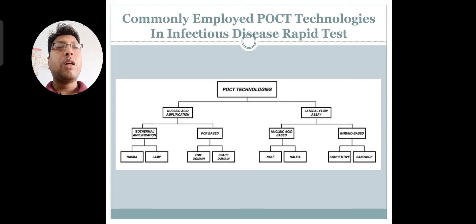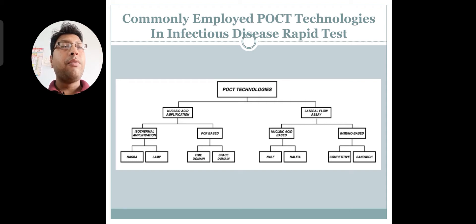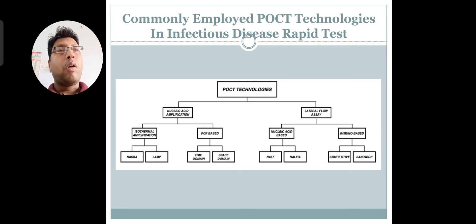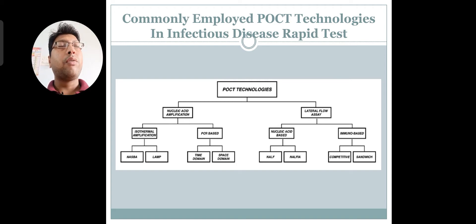In isothermal amplification, nucleic acid sequence-based analysis and LAMP are commonly used. For PCR, there are two types: time-domain using a conventional large thermocycler machine, which takes more time, and space-domain using chip-based or miniaturized PCR. Lateral flow assay is again classified into nucleic acid-based — where nucleic acid is amplified on paper — and immunoassay-based, where antibodies detect antigen on paper.